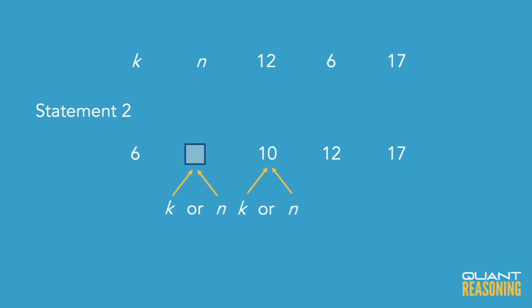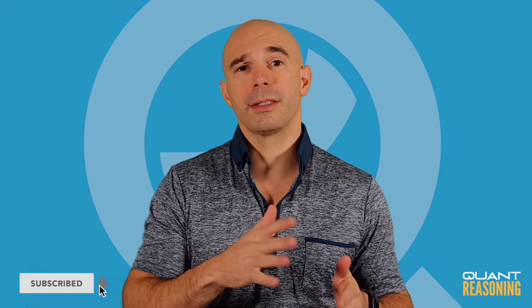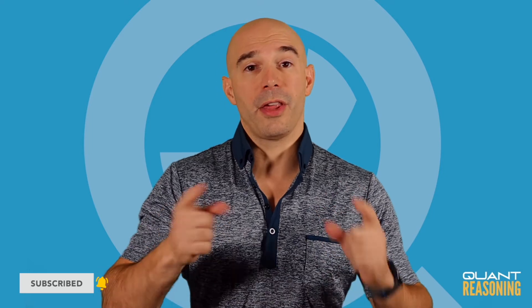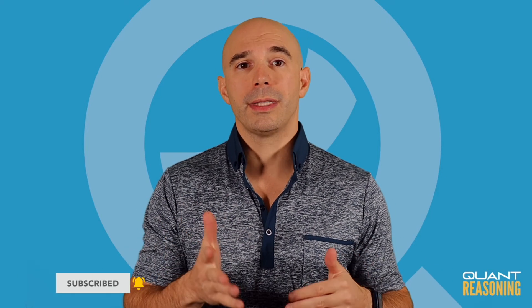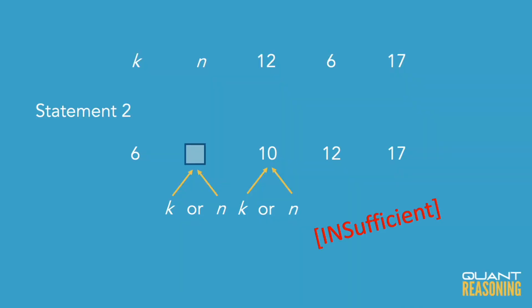Statement two is not sufficient on its own because I still can't definitively tell the value of n. I could just say that it's less than or equal to 10, and that either k or n or both is 10, but that's not enough to definitively give the value of n.